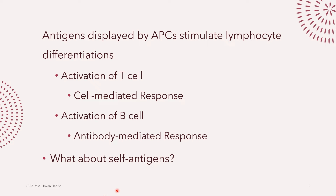Before we move further, we need to ask: what happens when our T cells or B cells detect antigens that belong to our own body? What happens when our adaptive immune cells encounter self-antigens? This is at the heart of many autoimmune diseases. If our immune cells get activated after detecting antigens, detecting self-antigens means our immune system will attack the cells of our own body — our soldiers attack our own citizens.